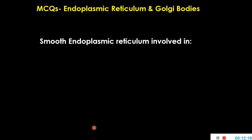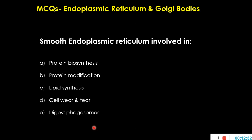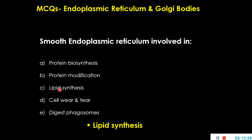The next question: smooth endoplasmic reticulum is involved in — protein biosynthesis, protein modification, lipid synthesis, saliva and tears, or digestive phagosomes? Phagosomes are digested by lysosomes; saliva and tears involve lysosomes containing hydrolases; protein modification is done by the Golgi apparatus; protein biosynthesis is done by ribosomes. The only option left is lipid biosynthesis. Smooth endoplasmic reticulum is also involved in calcium transport, drug metabolism, and synthesis of triglycerides, phospholipids, and sterols. The key role is lipid biosynthesis — that is the correct answer.